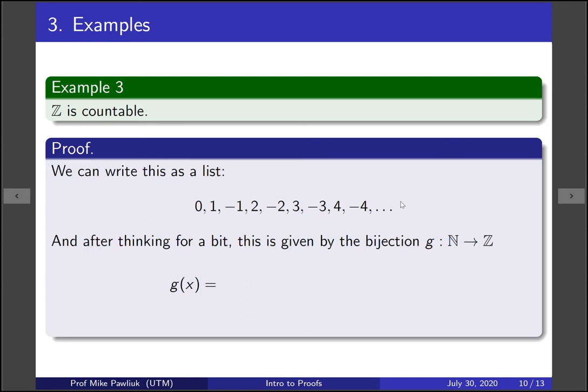But the issue with this is that it's not always clear, like, it's not really a proof, because it's not clear what the hundredth thing on this list will be. So a more formal way to prove that this is countable is by explicitly giving a bijection from the naturals to the integers.